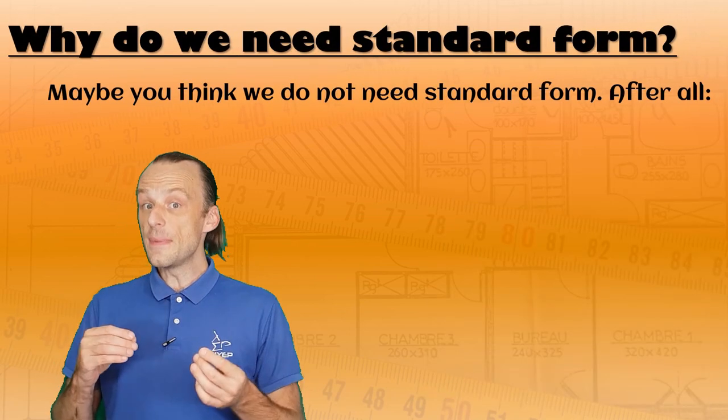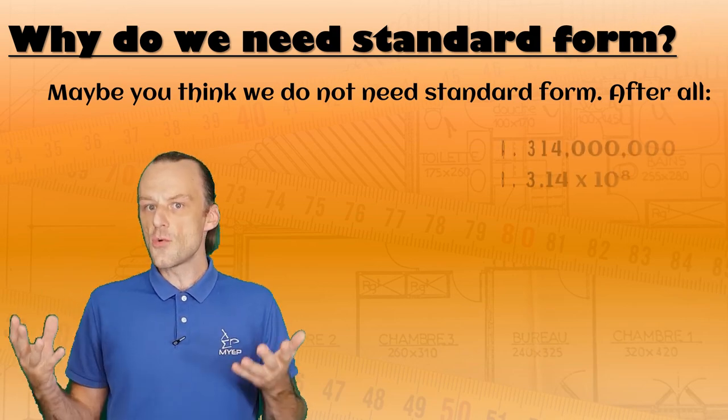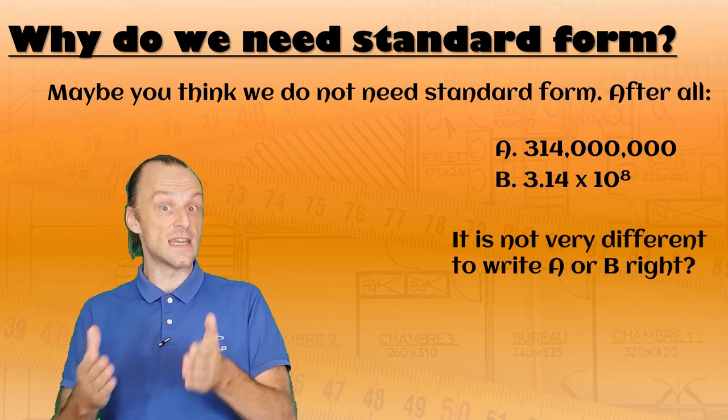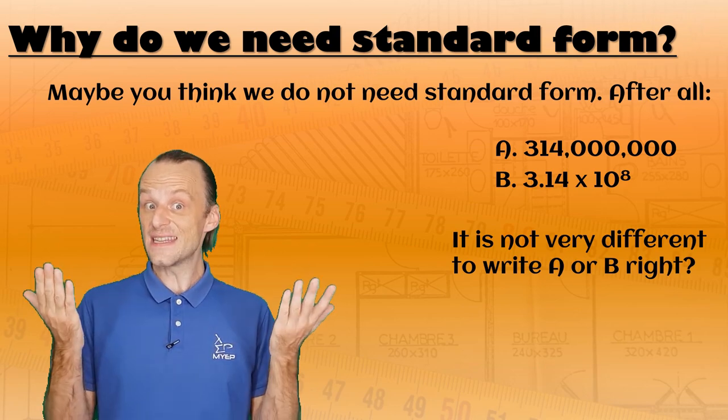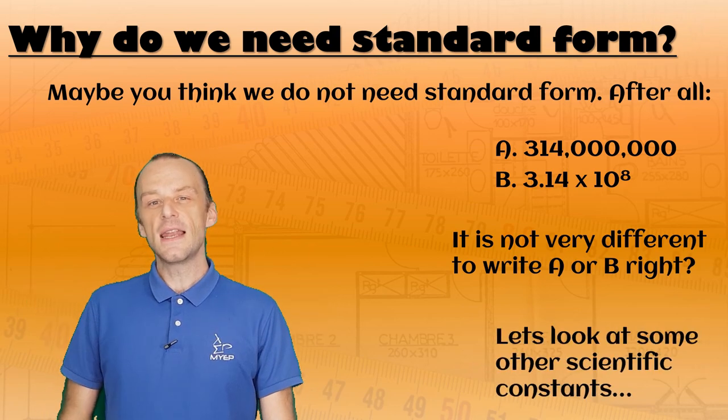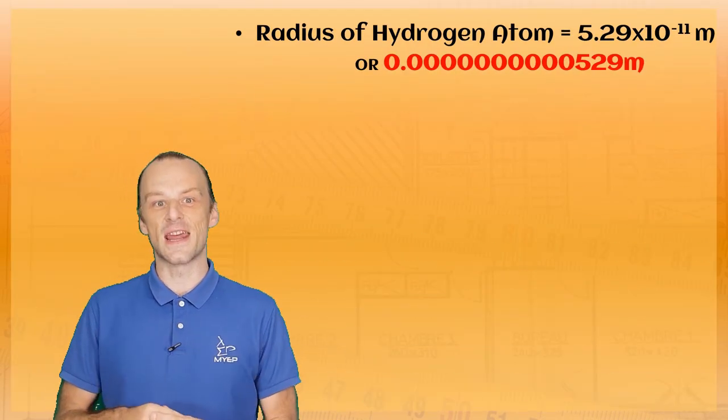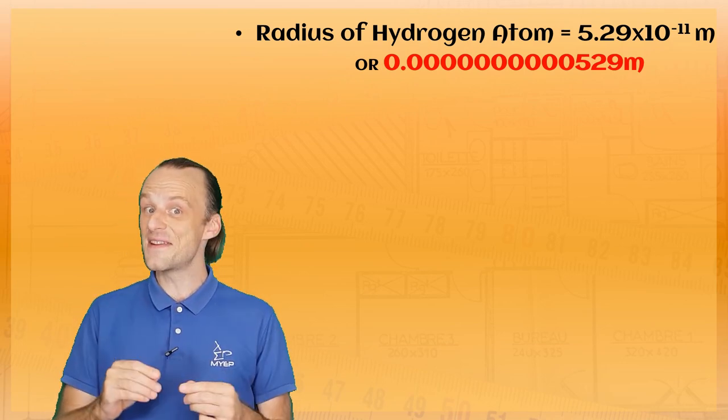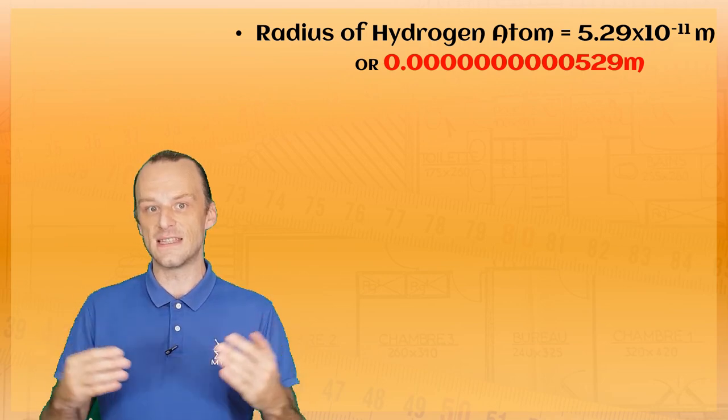Finally, you might be asking why we even need standard form to write numbers. After all, it's not that different to write out 314 million and 3.14 times 10 to the power of 8, right? To answer that, let's look at some of the other constants of science. Here is the radius of a hydrogen atom, 5.29 times 10 to the power of minus 11 meters. And here it is in its full decimal form. But we can keep going. The estimated number of grains of sand on Earth. This is just a number so it doesn't have any unit to go with it.